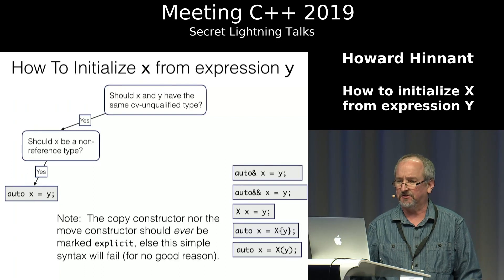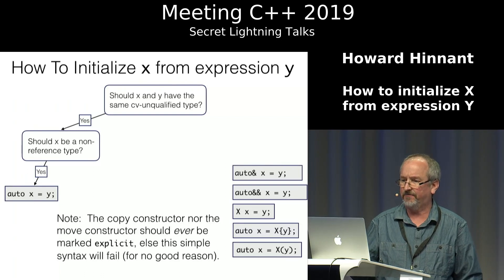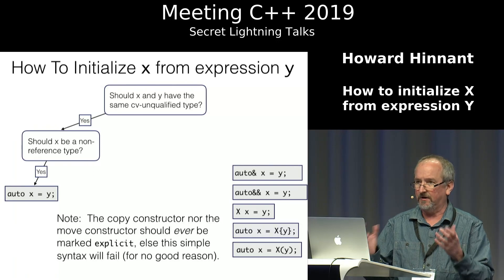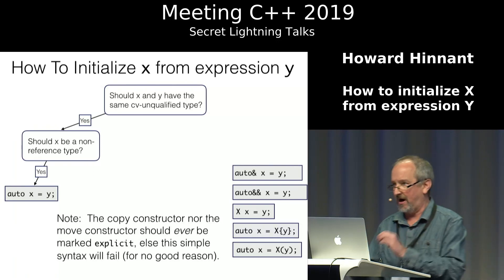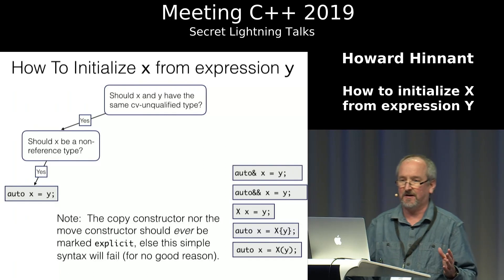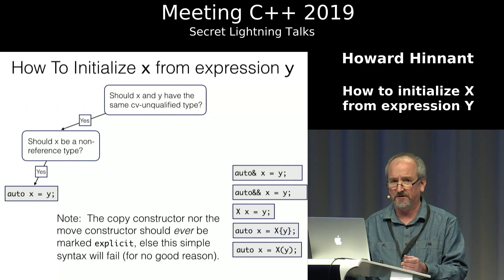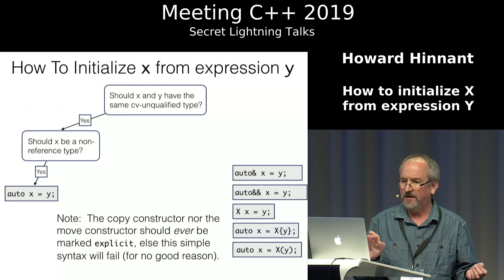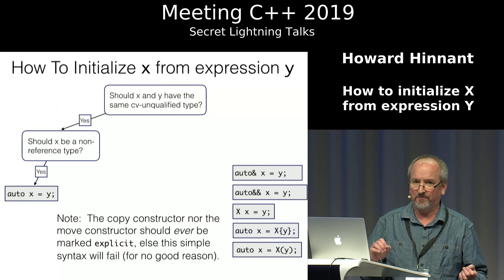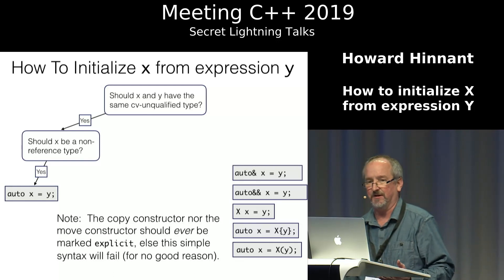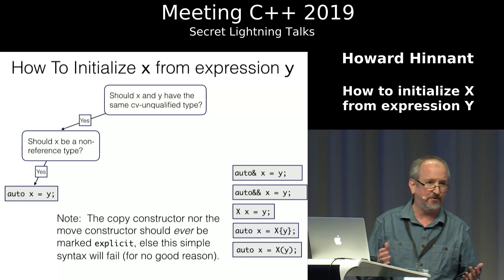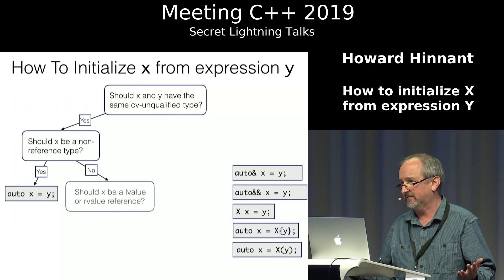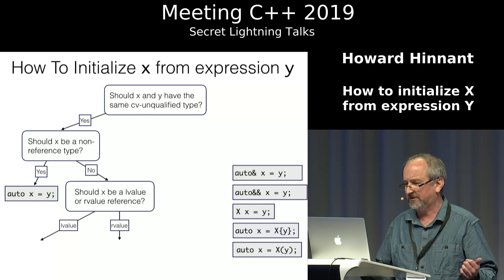At the top of the decision tree: should X and Y have the same CV-unqualified type — are we not doing any kind of conversion between Y and X? If not, the next question is: is X supposed to be a reference type? If it's not a reference type, `auto X = Y` is a great way to make a copy. Just make sure you don't put explicit on your move constructors and copy constructors — it's legal, but I've never seen a good use case for it.